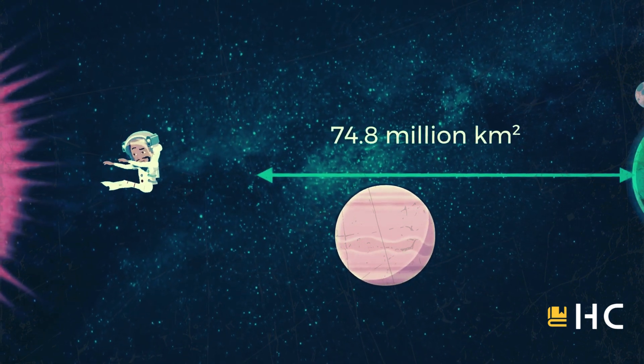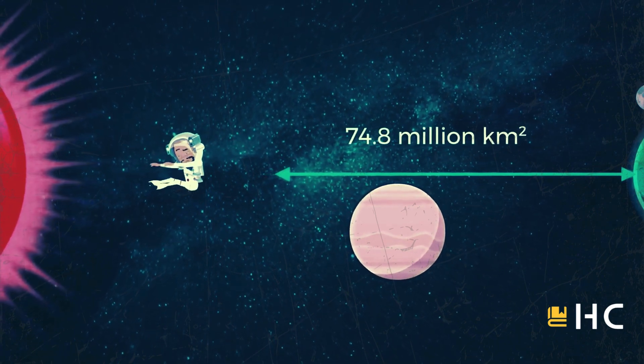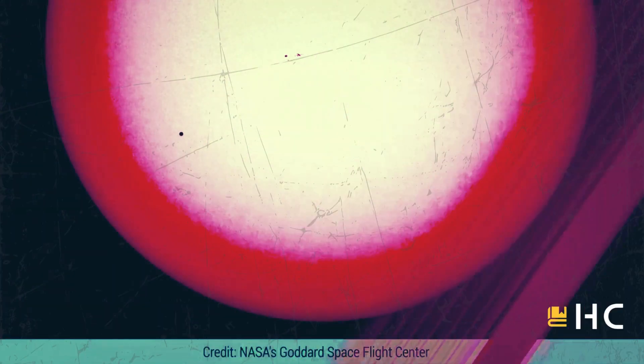This tiny dot moving on the golden platter of the sun is Mercury, the first and smallest planet of our solar system.